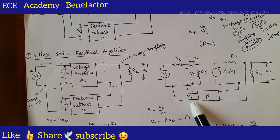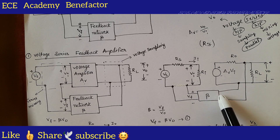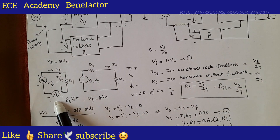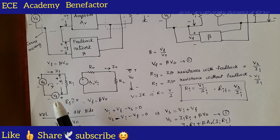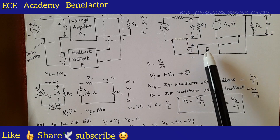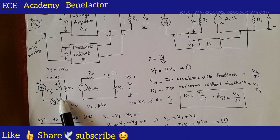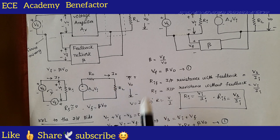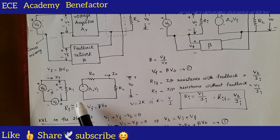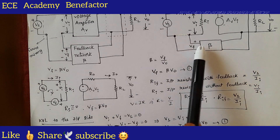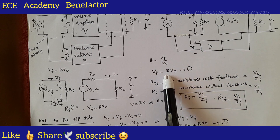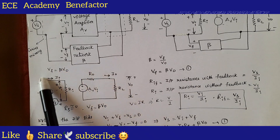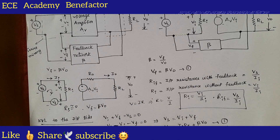Now, what has been done is the feedback network block has been replaced by connecting a feedback voltage V f at the input side — since the feedback network sends a feedback voltage to the input. The remaining elements are the same. The equivalent circuit now shows V s, V i, V f, A v V i, R naught, R L, and V naught. The feedback ratio beta is defined as V f by V naught, so V f equals beta times V naught.